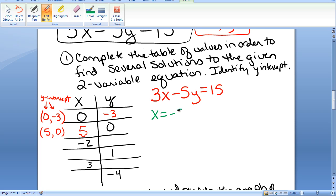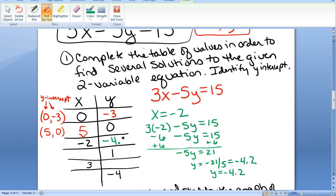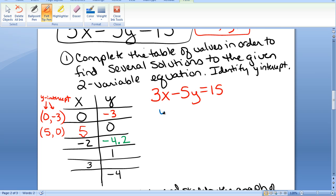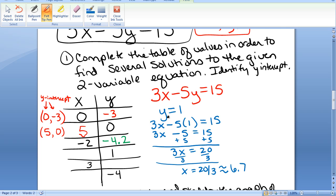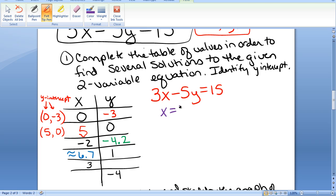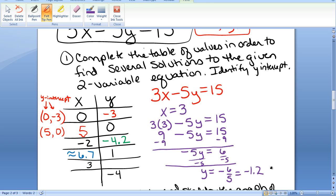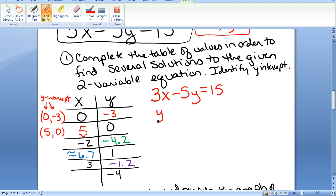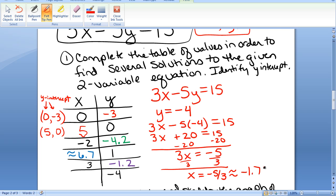Given X equals negative 2. When X is negative 2, Y equals negative 4.2. Given Y equals 1. When Y equals 1, X is approximately 6.7. Given X equals 3. If x equals 3, then y equals negative 1.2. If y equals negative 4, then x is approximately negative 1.7.